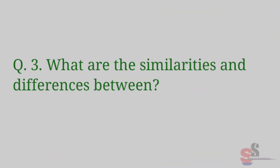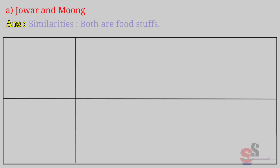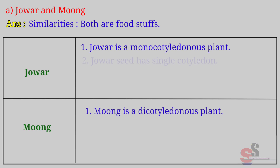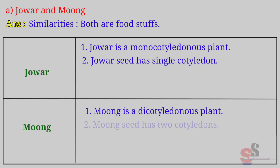Question 3: What are the similarities and differences between? A. Jawar and Moong. Answer: Similarities — Both are flowering plants. Differences: Jawar is a monocotyledonous plant whereas Moong is a dicotyledonous plant. Jawar seed has a single cotyledon; Moong seed has two cotyledons.